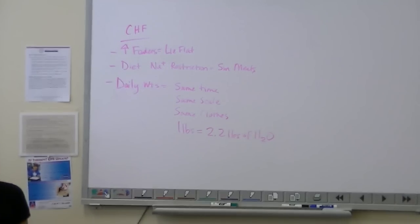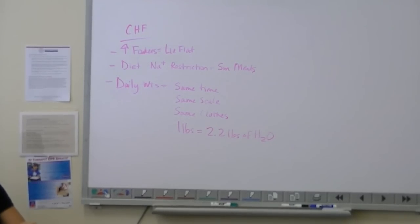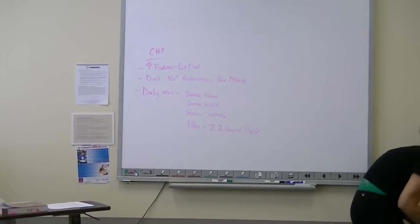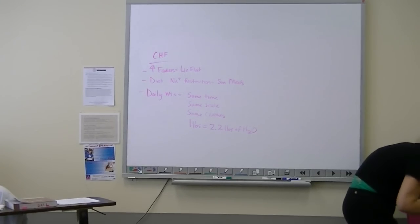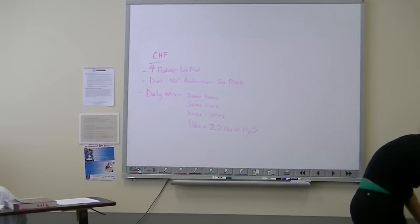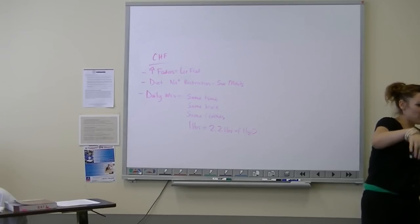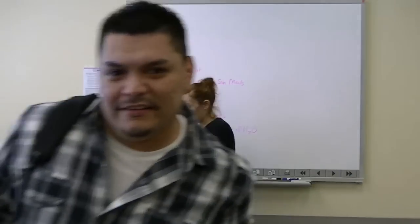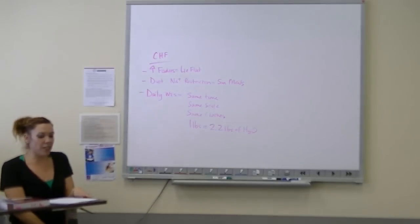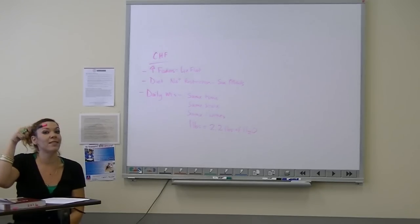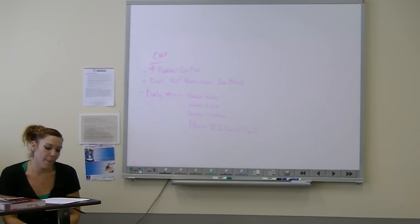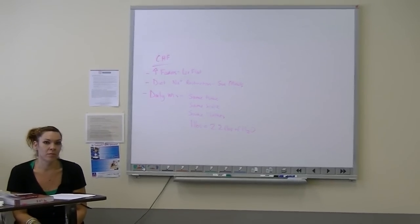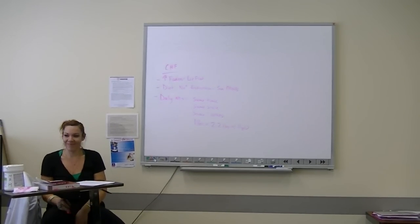Signs and symptoms of digoxin toxicity and what are the therapeutic ranges? Digoxin toxicity: this is where we see yellow rings around the lights. What's normal range? 0.5 to 2.0 nanograms per deciliter.